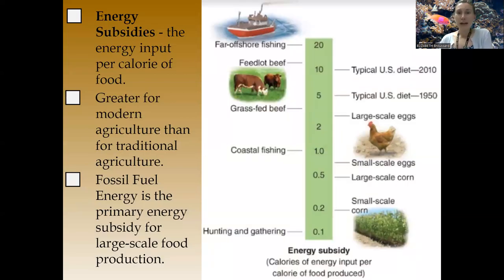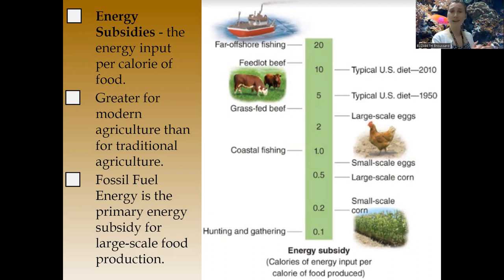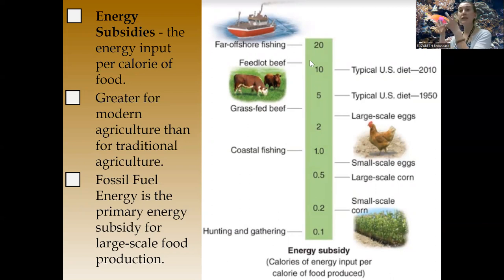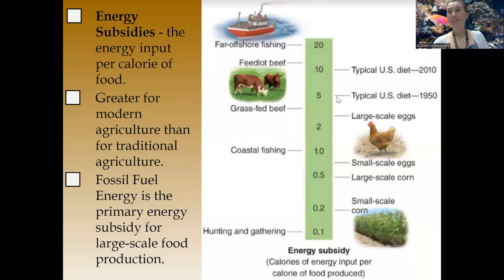One thing to note is energy subsidy — a downside of the Green Revolution. Energy subsidy by definition is how much energy is needed per calorie of food produced. Comparing offshore fishing versus small-scale corn farming: offshore fishing requires more energy per calorie because not only do you need to fish, but you need fossil fuel energy to take the boat out and back. Everything that came from the Green Revolution helps us get better yield, but it costs a lot more energy, making it more detrimental to the environment.